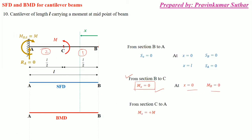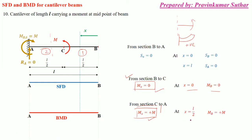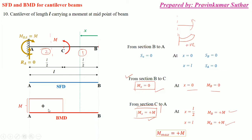From section C to A, the bending moment is positive. As you can see from the section, the moment creates sagging, so it is taken as positive M. This bending moment remains constant throughout from C to A, because there is no intermediate force or moment between A and C. So the bending moment is plus M throughout, and the maximum bending moment equals M.